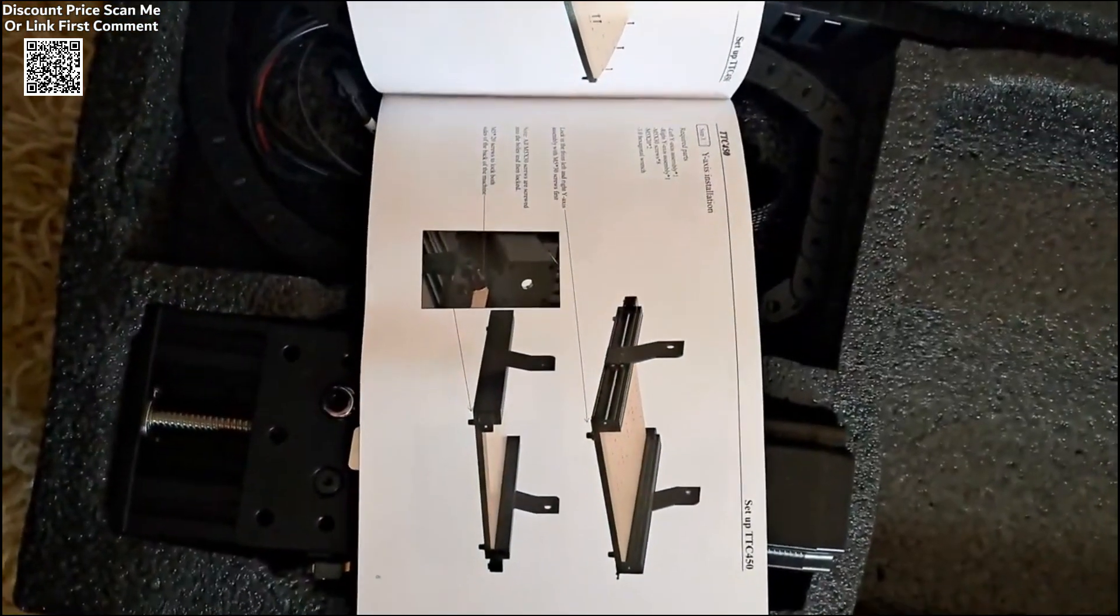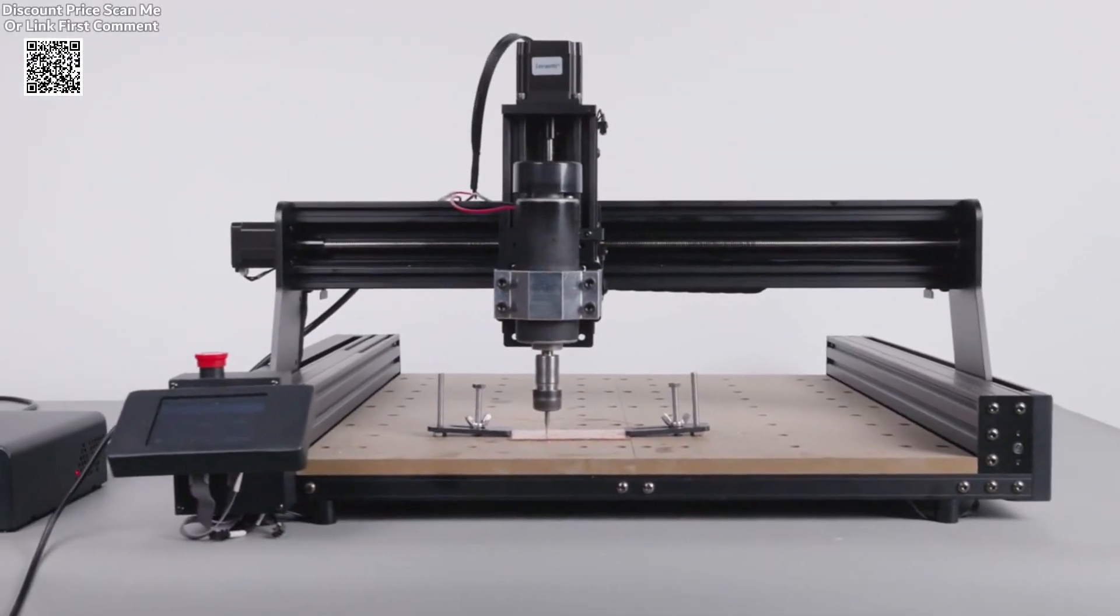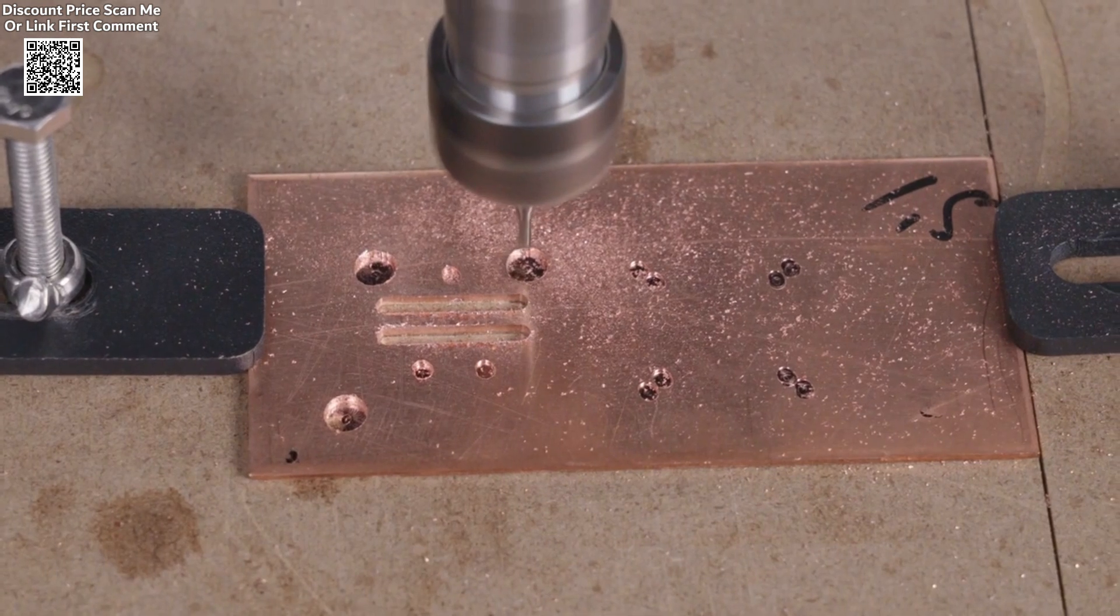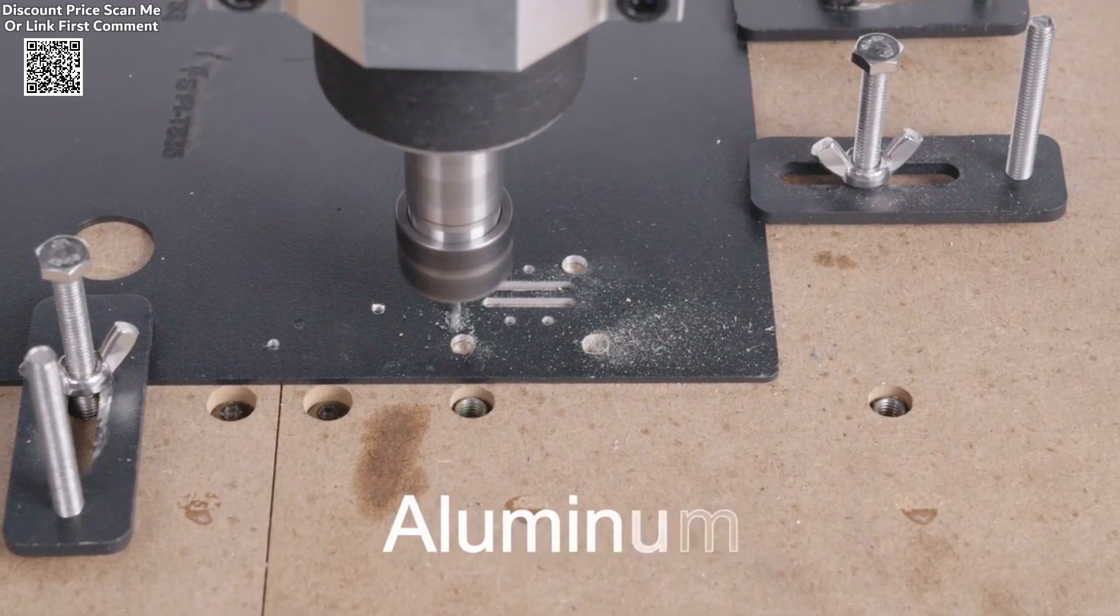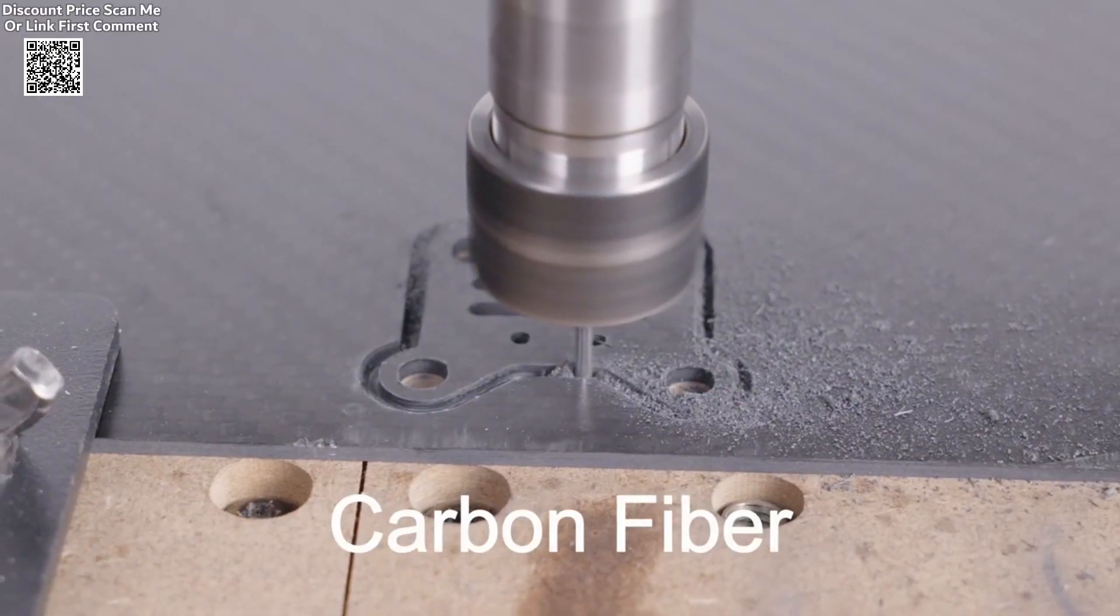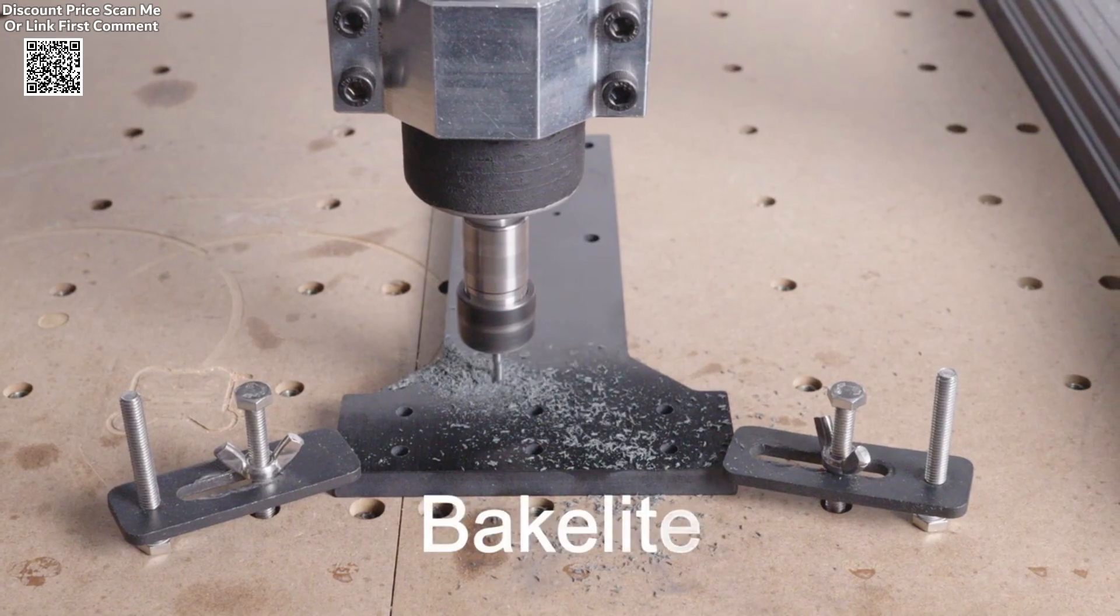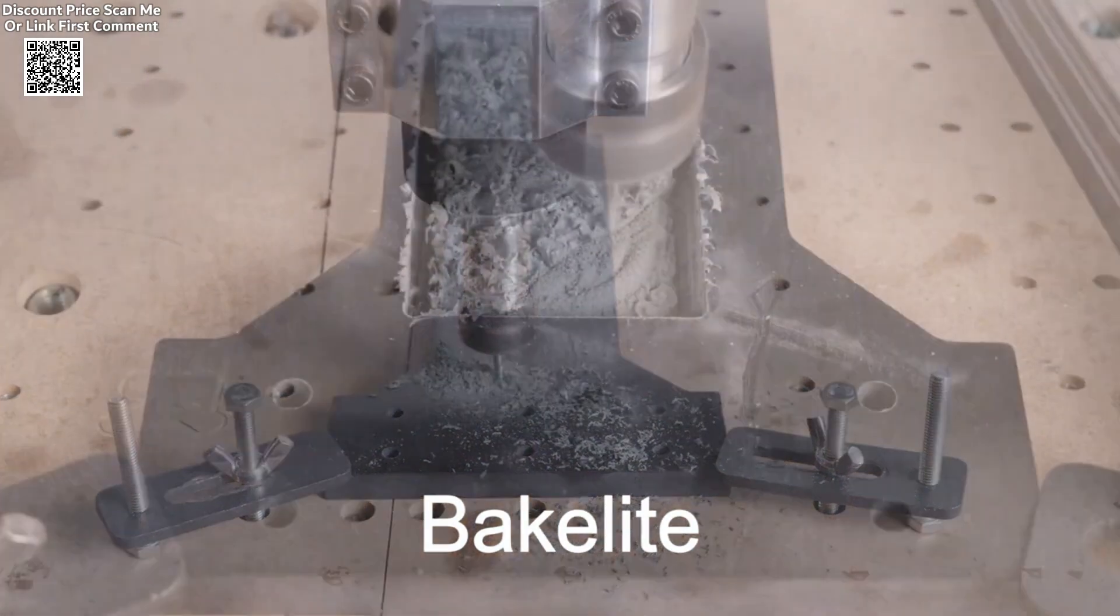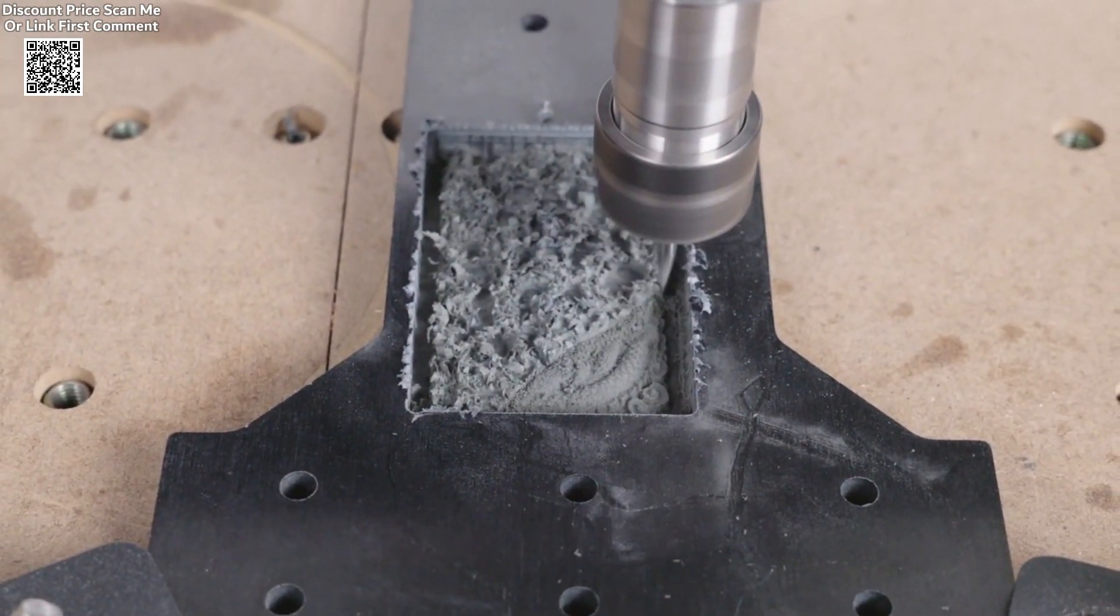One of the standout features of the TTC450 is its precision and stability. The machine boasts an engraving accuracy of 0.01 mm, which is achieved through its 3-axis double-limit system, emergency stop switches, and advanced motion control. The C-axis movement accuracy is particularly impressive, reaching up to 0.0025 mm, which significantly enhances the precision and stability of the engraving process.